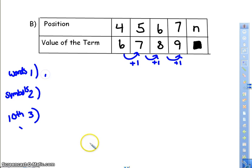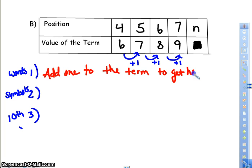In words, you can put, I add 1 to the term to get the next. Now you'll notice that I'm not doing 4 plus 1. That's 6. So in order to figure out using your position, which is n, you need to figure out what you're doing to the 4 to get the 6, what I'm doing to the 5 to get the 7, what I'm doing to the 6 to get the 8, what I'm doing to the 7 to get the 9.